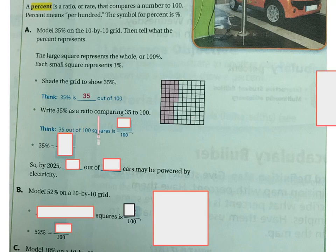So if you're writing 35% as a ratio comparing 35 to 100, you've got to think 35 out of 100 squares is 35 over 100. So 35% is 35 over 100.